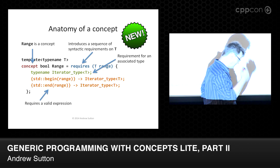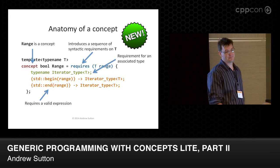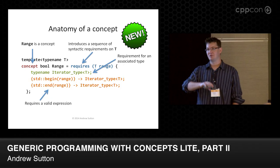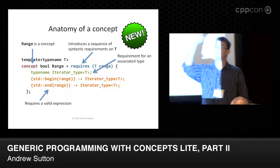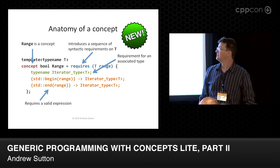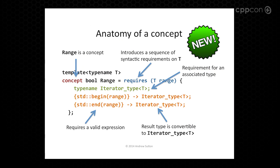In this case it uses std::begin and std::end. You can do that with some extra namespace stuff. The result type is convertible to the given type. The expression on the left must be convertible to the type on the right.